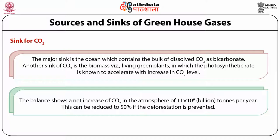The balance shows a net increase of carbon dioxide in the atmosphere of 11 × 10⁹ tons per year. This can be reduced by 50% if deforestation is prevented. The carbon dioxide content in the atmosphere is the result of exchange fluxes between very large reservoirs — that is, the atmosphere, biosphere and the oceans.